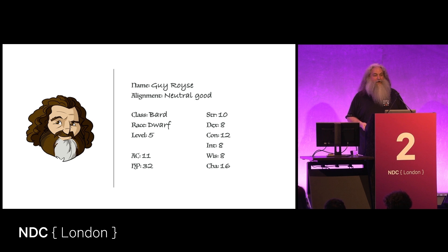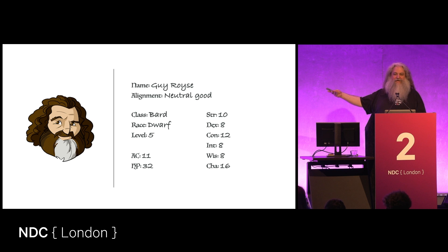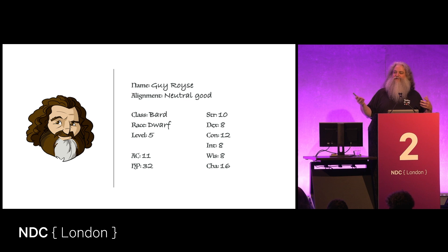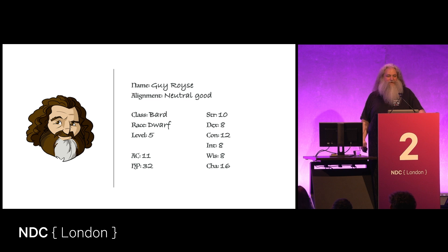You might notice my armor class is eleven — I'm not wearing armor and my dexterity is an eight. As a developer advocate I've got a plus two bonus to armor just because I have a tough hide from being a public speaker. You suffer those slings and arrows and build a thick hide. My notable stats are intelligence and wisdom of eight, and charisma of sixteen — which tells you everything you need to know: all sizzle, no steak.